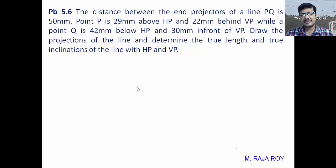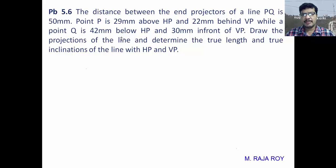In this tutorial, I will explain the projections of straight lines problem which is inclined to both the reference lines. The problem is: the distance between the end projectors of a line PQ is 50mm. Point P is 29mm above HP and 22mm behind VP, while point Q is 40mm below HP and 30mm in front of VP. Draw the projections and find the true length and two inclinations with HP and VP.